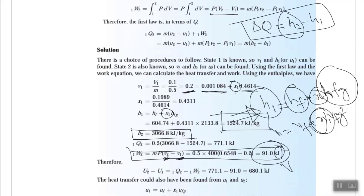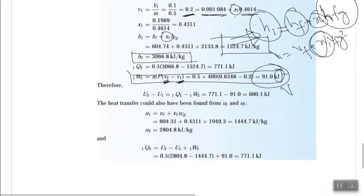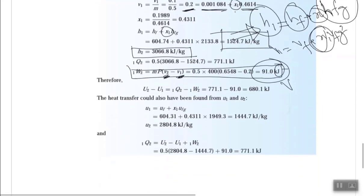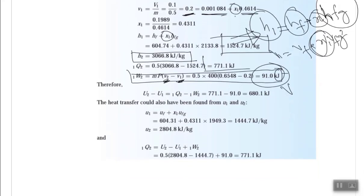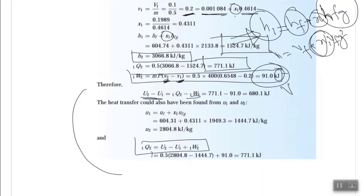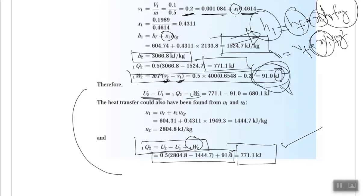Now with both h1 and h2, you can find the heat transfer as the change in enthalpy. Alternatively, find the change in internal energy from tables and add work done to get heat transfer — both methods give the same result. If you have any problems, post them in the classroom and I'll be able to answer. Thank you very much, have a nice time.